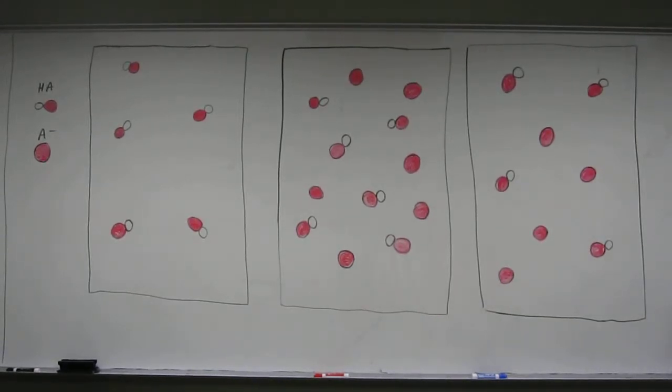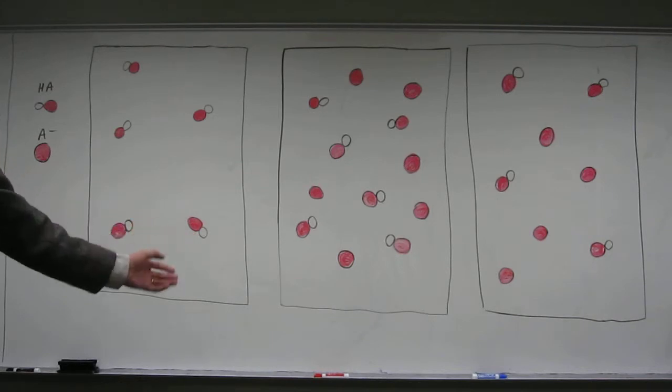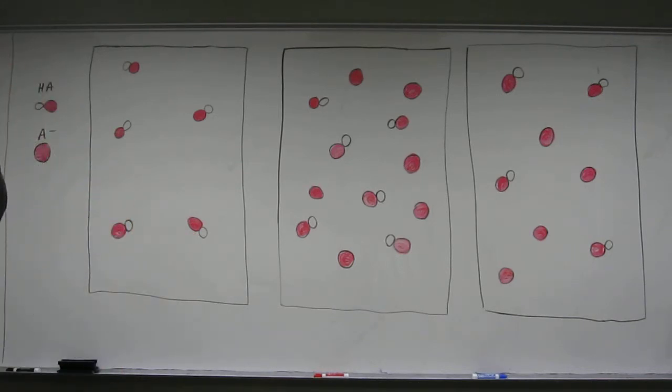So this problem says the following pictures represent solutions that contain weak acid, which we call HA, and its conjugate base A minus. Potentially they have these things in them and you can see that in the picture. Which of the solutions are buffer solutions is the first question.